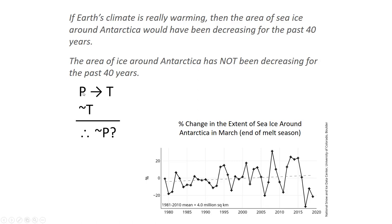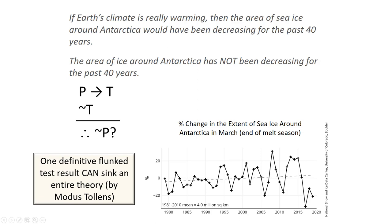So this is the form of this argument: if P, then T. So if P is true, then T has to be true. The question is, do we have to conclude that P is not true? Do we have to conclude that Earth's climate is not really actually warming? Well, it turns out that if both of our premises are true — the 'if P then T' part and the 'not T' — if they are both true, then that would totally sink our hypothesis that Earth's climate is warming.